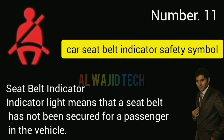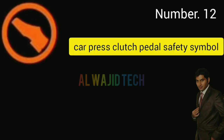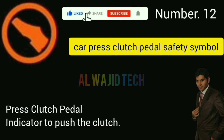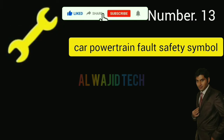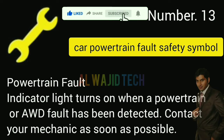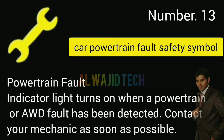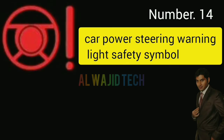Number twelve: Car press clutch panel. The press clutch panel indicator prompts you to push the clutch. Number thirteen: Car powertrain fault. The powertrain fault indicator turns on when a powertrain or AWD fault has been detected. Contact your mechanic as soon as possible.